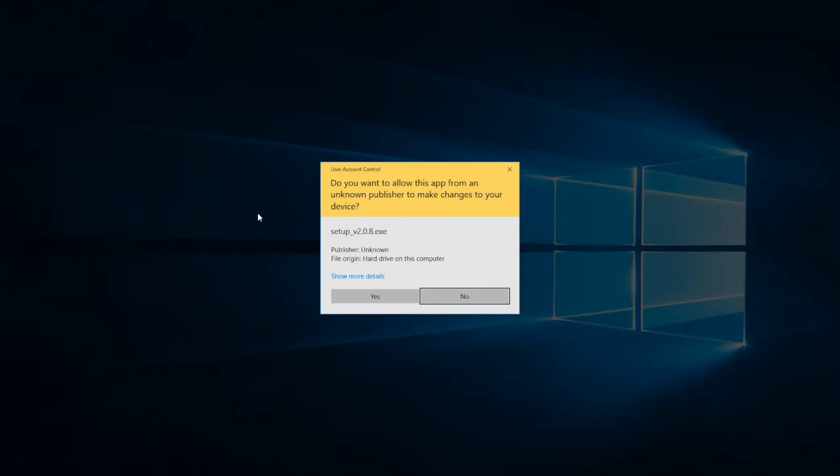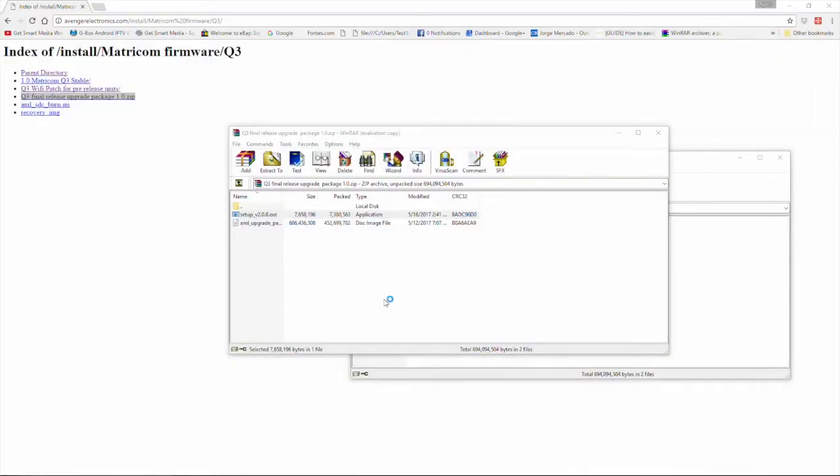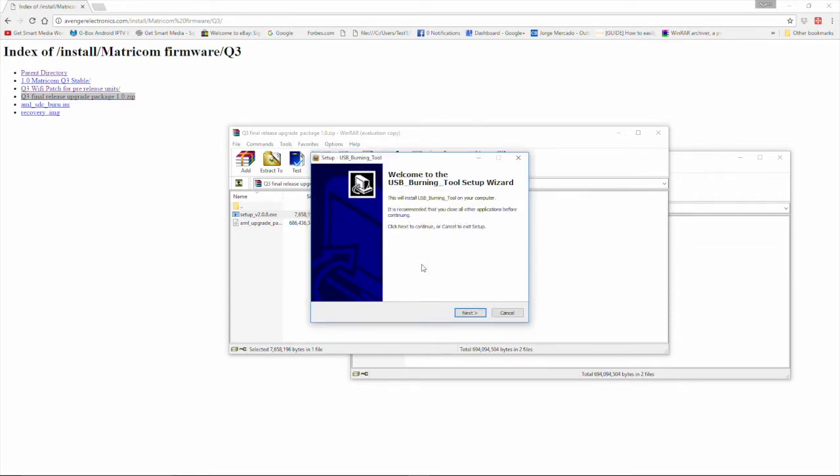You should get this pop-up. It says do you want to allow this app from an unknown publisher to make changes to your device. We're going to say yes. Then it's going to ask you what language you want to set it up in. Right now it's either English or Chinese. We're going to say English. Welcome to the USB burning tool setup wizard. Just click next.